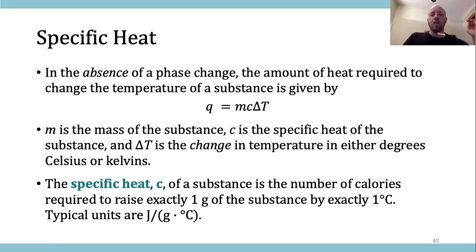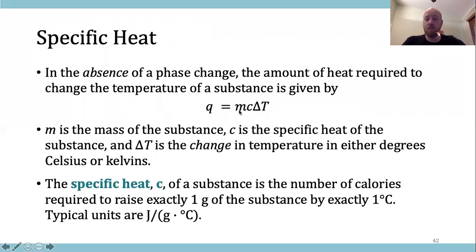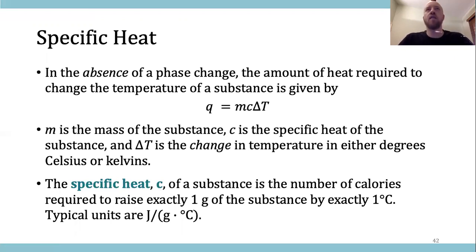Specific heat. This deals with our heat value Q. The equation is Q = mcΔT. M is the mass, C is a new term called specific heat, and ΔT is the change in temperature — final minus initial. Mass is usually measured in grams and ΔT is in degrees Celsius. Specific heat is related to the material — it is a physical property describing how much energy is required to raise one gram of the substance one degree Celsius.